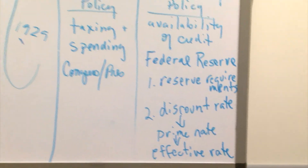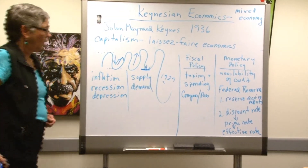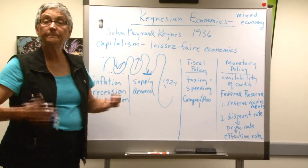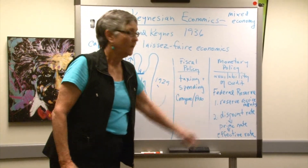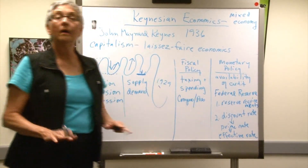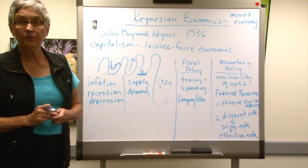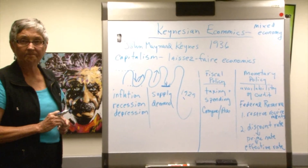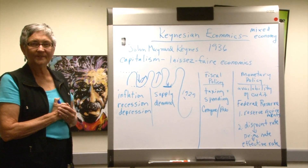Now let's say you want to stimulate the economy — the economy is down in the dumps. What can you do? Lower taxes, more money, and increase spending. On the monetary side: reduce the reserve requirements so there's more money to lend, and lower the discount rate, which will lower the prime rate, which will lower the effective rate, so we don't have to spend so much for money we borrow. That's a little bit about Keynesian economics. Read the chapter carefully and think about this a while — I think you'll find it quite interesting. Thanks.